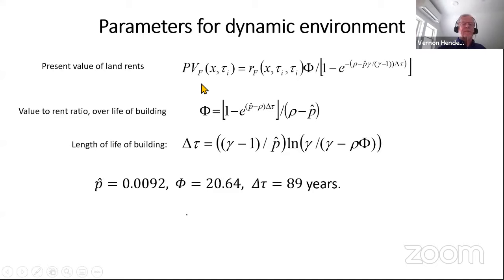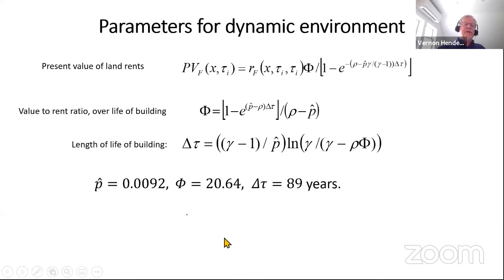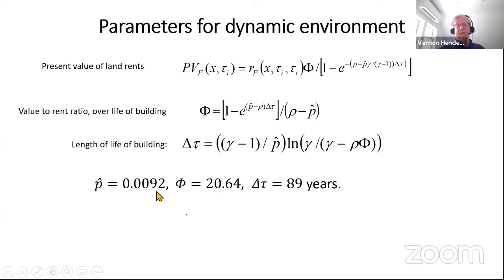We then have a bunch of equations with the present value of land, the value-to-rent ratio, and the length of life of the building. From these you can solve for the rate of price appreciation — just under 1% per year — and the value-to-rent ratio, which is right in the center of ranges you can find for all major US cities.